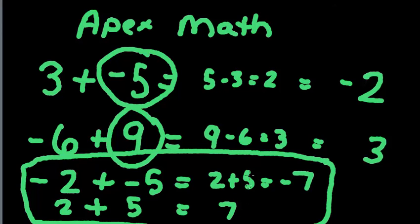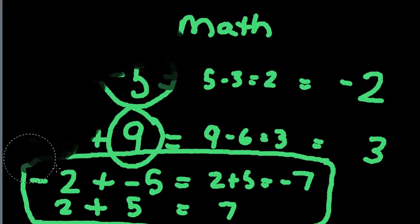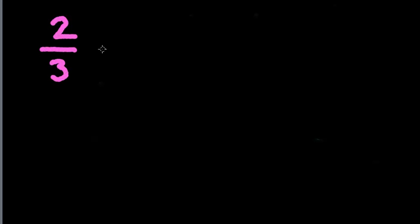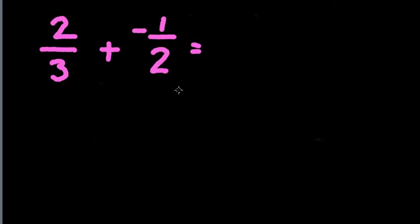So how do we do it when we have fractions? Let's take a look at that situation. The rules don't change. The only thing that changes is that now we have to deal with fractions, and we have to decide which fraction is bigger. So let's say we have 2 thirds plus a negative 1 half. These two fractions have different signs, so I know I'm going to subtract the two numbers. I know I take the bigger number and subtract the smaller number. 2 thirds is bigger than 1 half, so I know I'm going to do 2 thirds minus 1 half.